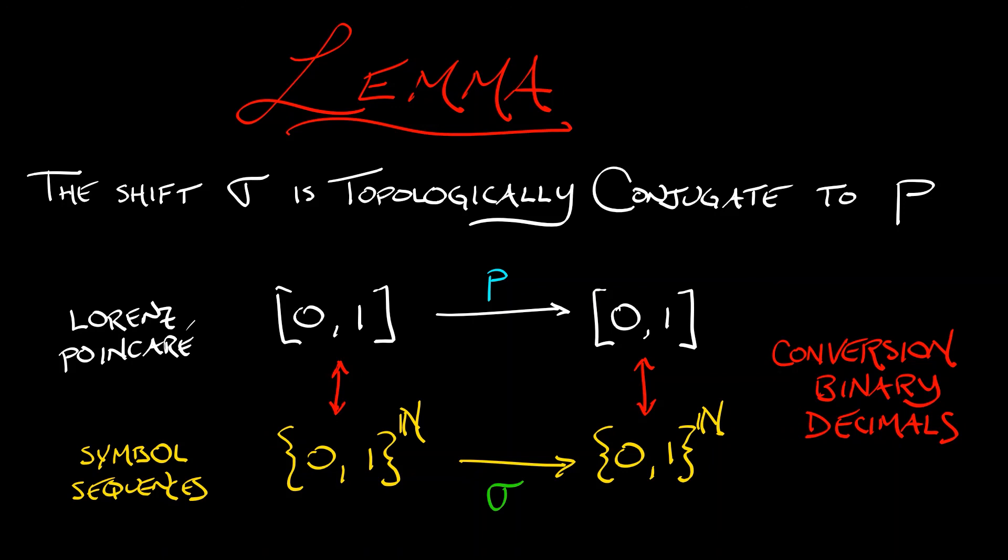Now there are a few details that the mathematically sophisticated among you know that I am skipping, but work with me, people. What I mean by topological conjugacy is that the dynamics of these two maps is the same: that you can look at what happens under the Poincaré return map and convert to a symbol sequence, or you can convert to a symbol sequence first and then shift the decimal point, and you get the same thing. Now this is not a surprise, this is what we argued from the very beginning.